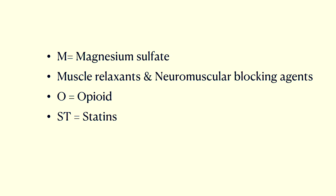O means opioids, and ST means statins. As you all know, magnesium sulfate is used for seizure prophylaxis in pregnant women with preeclampsia. So if a pregnant woman has myasthenia gravis, seizure prophylaxis should instead be done with valproic acid.